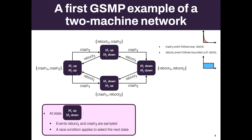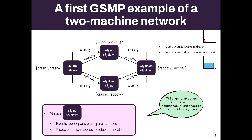We can navigate in this graph, and you can see that this defines some kind of infinite state system, because the delays and timing of the different events have to appear in the configuration. So this generates an infinite non-denumerable stochastic transition system. This is quite a complex system that we can generate using this simple example.